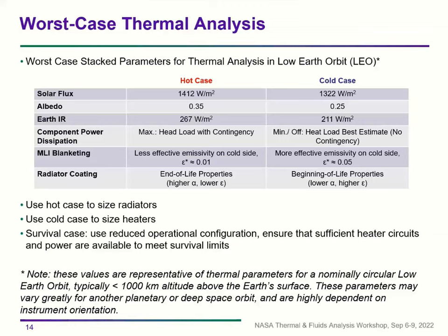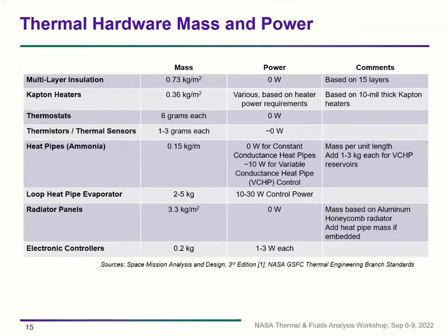For a survival case, use a reduced operational configuration and ensure there are sufficient heater circuits to meet survival limits. These values represent typical parameters for nominally circular low Earth orbit but vary greatly for other planetary or deep space orbits and are highly dependent on instrument orientation. There are also guidelines available for estimating thermal hardware mass and power for typical thermal components.